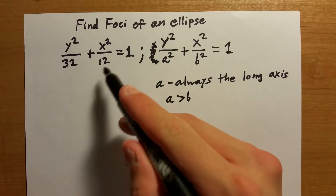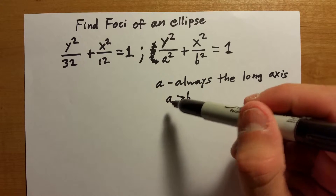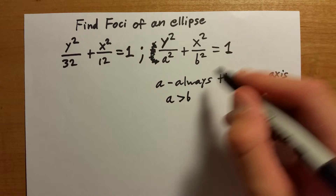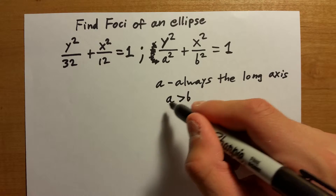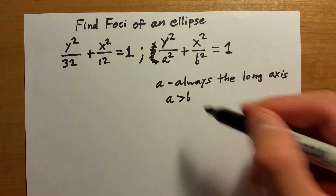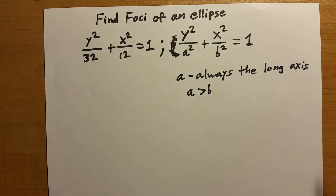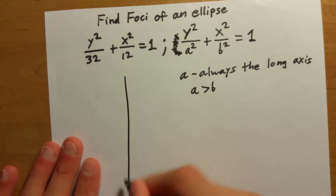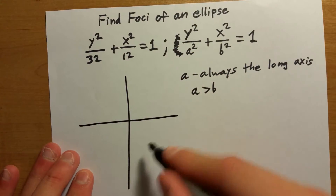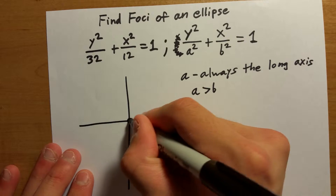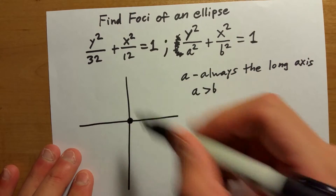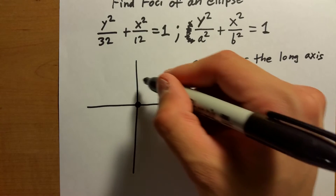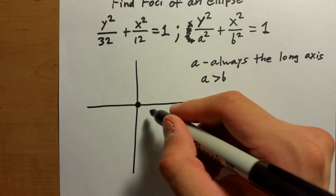Just remember: a is always going to be greater than b, so b will always be the smaller number and a will always be the larger number. B will not have a foci, and a is the one that will have a foci. Now that we've covered that, we can move on to actually graphing the equation. The center is going to be at (0, 0) since we have nothing affecting the x or y.